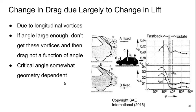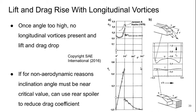Interestingly, the change in drag is largely due to changes in lift, which are caused by those longitudinal vortices. If the angle is large enough, the vortices don't form at all, and drag is no longer a function of angle. The exact critical angle is somewhat geometry dependent but is usually around 30 degrees. Both lift and drag rise with the strength of the longitudinal vortices when they're present. But if the angle is too high, there are no longitudinal vortices, and both lift and drag drop — which is why we see drag rising then suddenly dropping as the longitudinal vortices disappear.